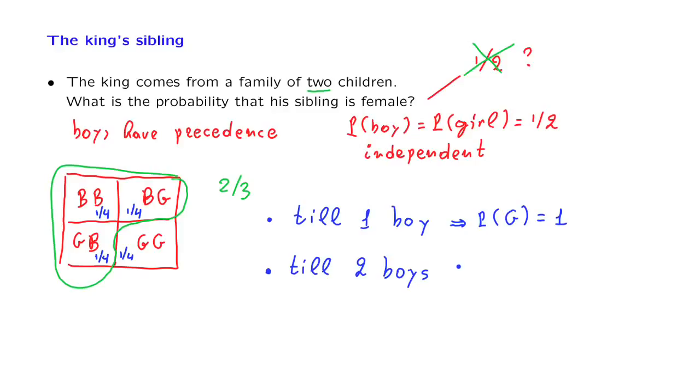if we are told that there are only two children, this means that there were exactly two boys. Because if one of the two children was a girl, the royal family would have continued. So in this particular case,